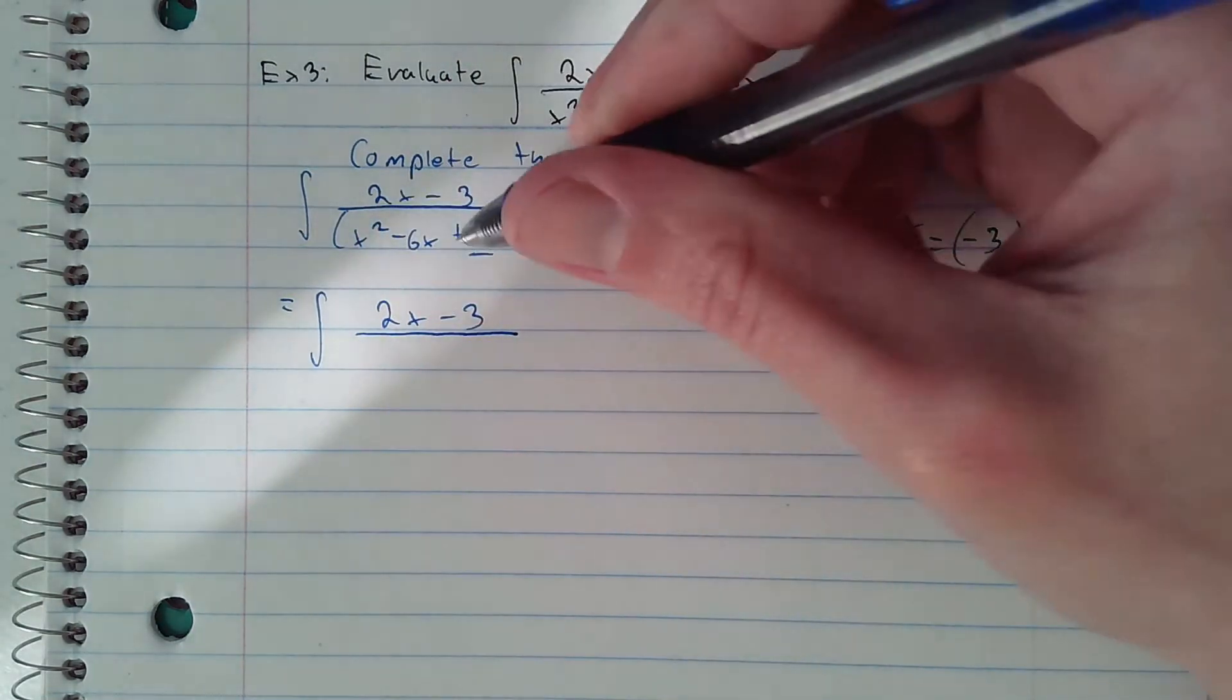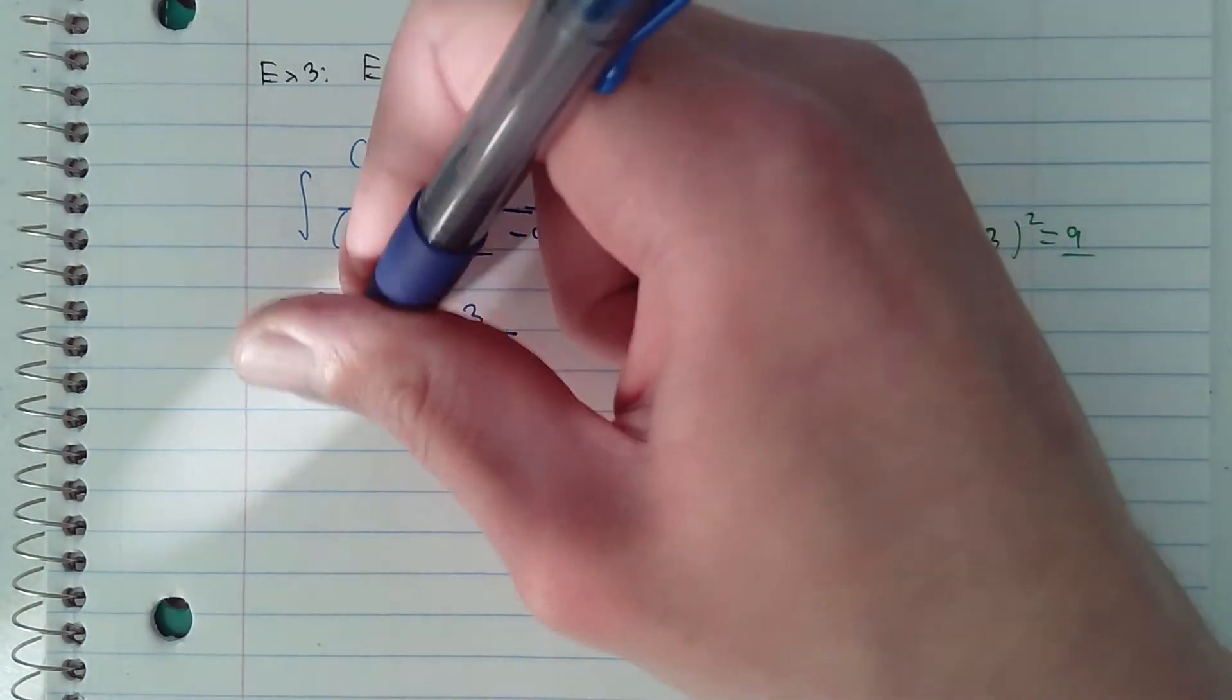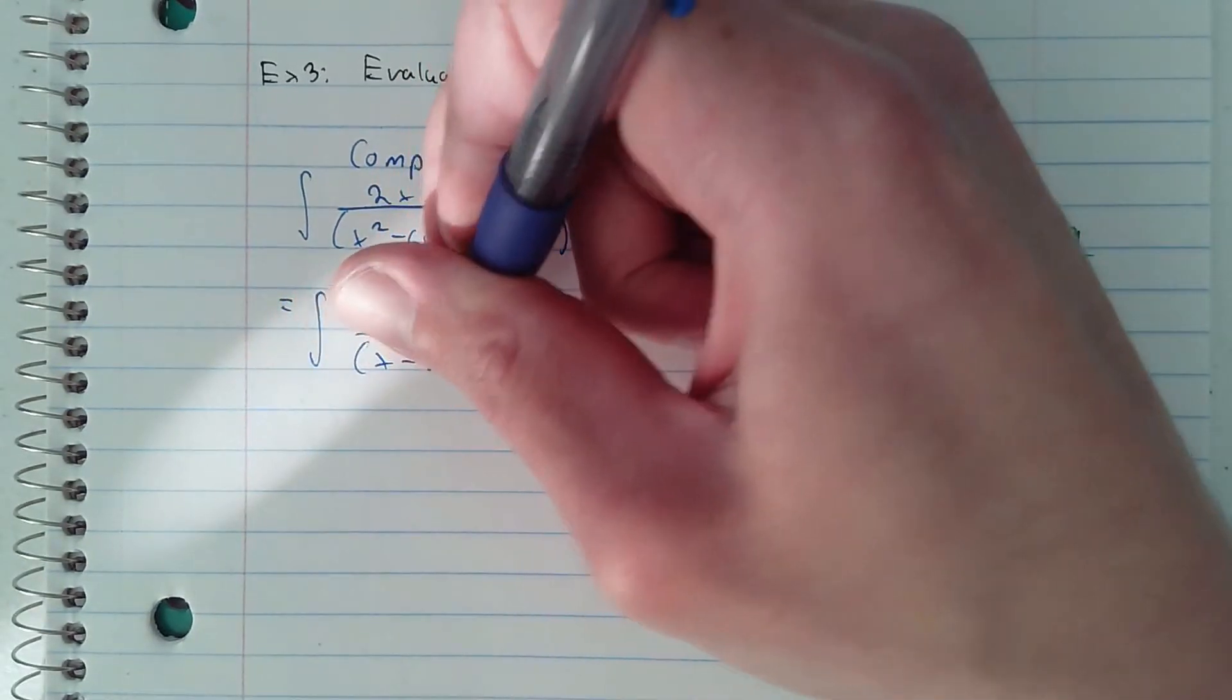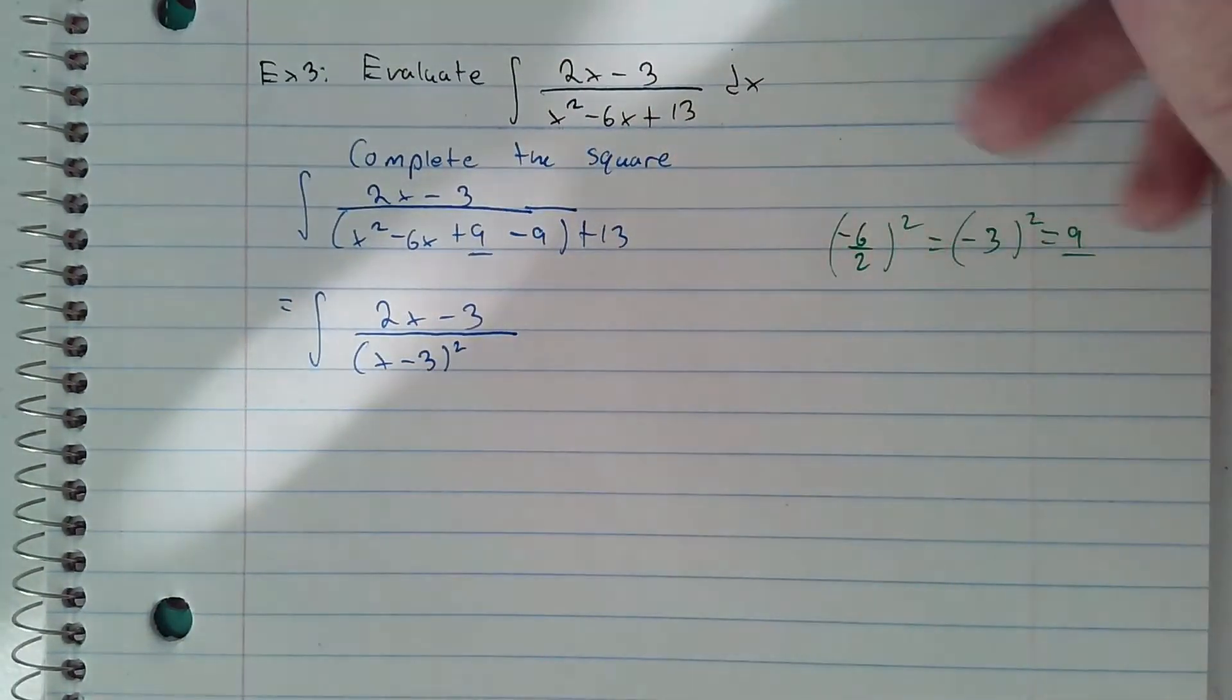When you factor x squared minus 6x plus 9, that's the quantity x minus 3 squared, and then negative 9 plus 13 is 4.